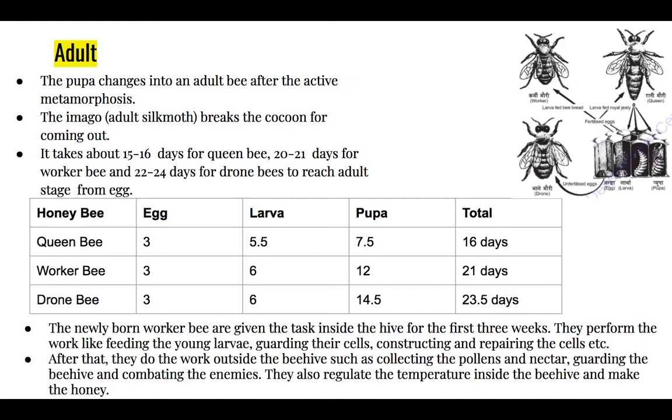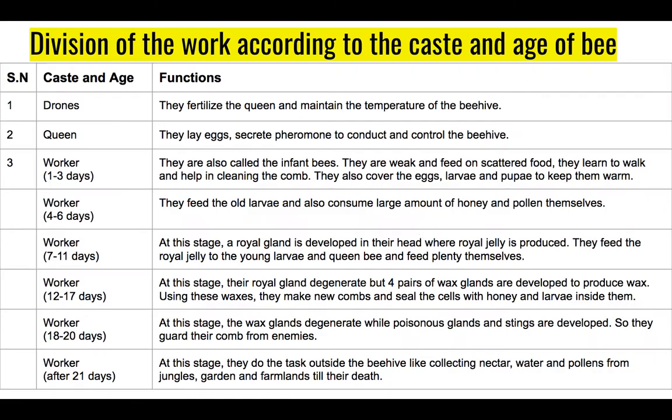They also regulate the temperature inside the beehive in summer. The division of work is done according to the caste and age of the bee. Since there are three types of bees with different functions, it is called a social insect. The drone is a male bee with only one function: to fertilize the queen.